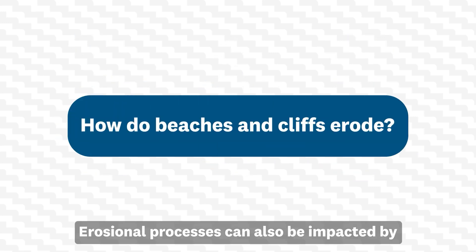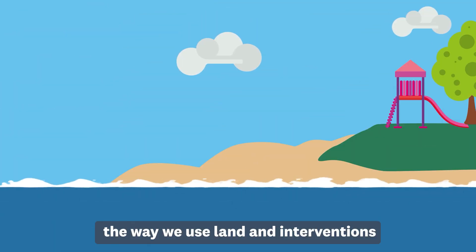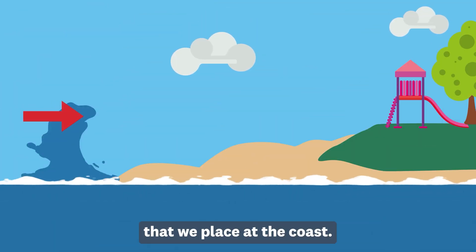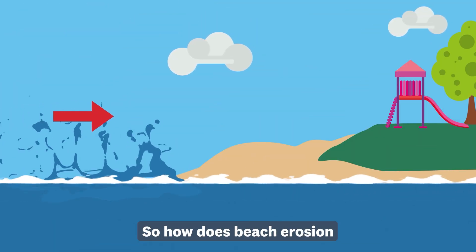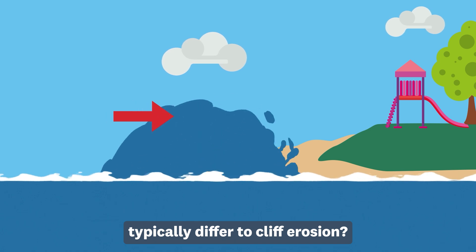Erosional processes can also be impacted by the way we use land and interventions that we place at the coast. So how does beach erosion typically differ to cliff erosion?